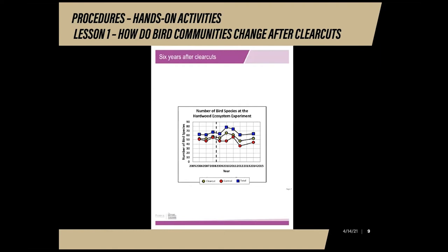Now that you are finished showing the data for all years of research, ask your students to go back and answer synthesis questions one through three. If I were a student going through this lesson, I would have needed to revise my predictions — it appears that my initial assumption about birds leaving the area was wrong. Thank you for watching this video tutorial on how to complete the activities for the unit Great Clear Cut Controversy, Lesson 1: How Do Bird Communities Change After Clear Cuts?